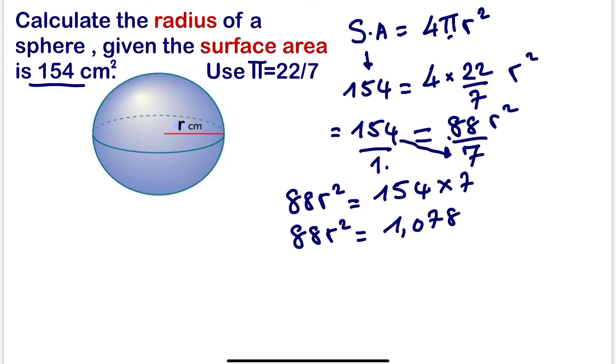So if we want to make r² the subject, we need to divide by the coefficient of r². So r² will be equals to 1078 divided by 88.